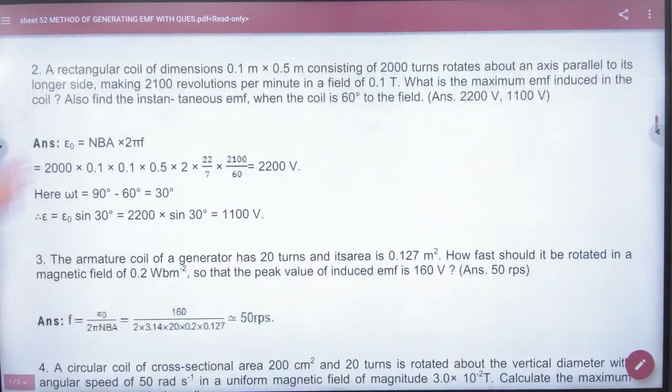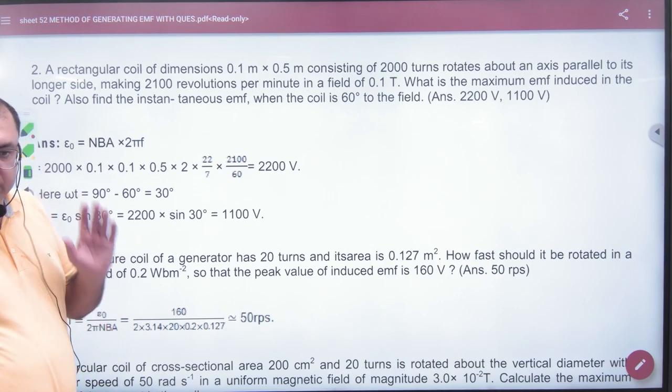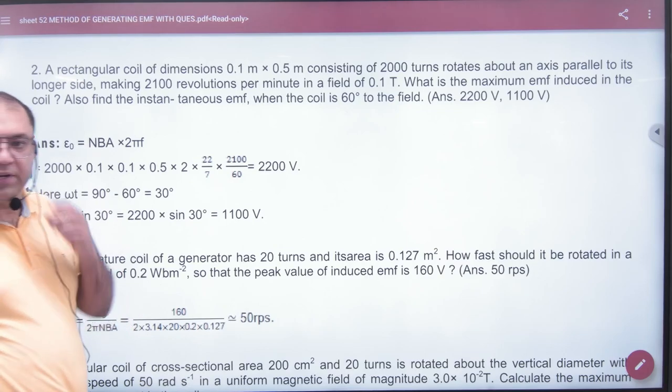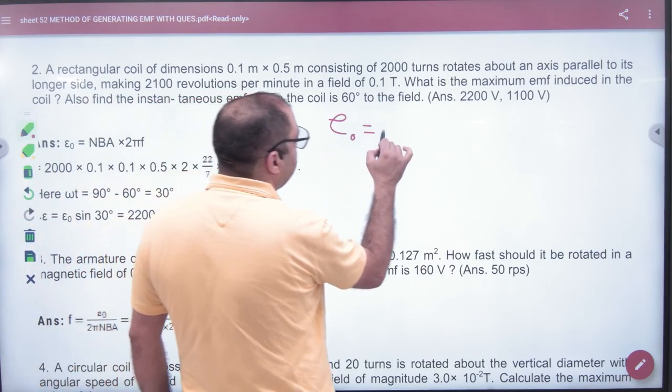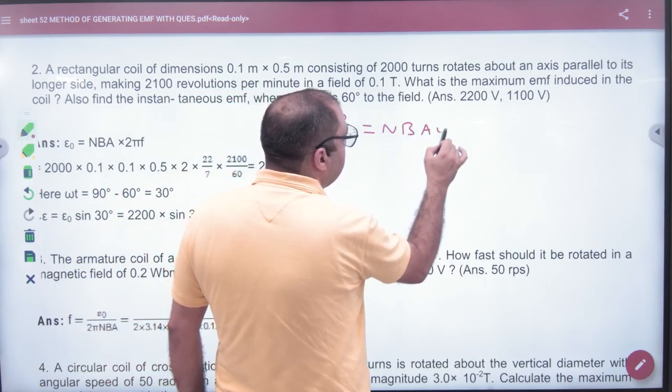Question number 2: A rectangular coil with dimensions 0.1 into 0.5, so we have given area. Consists of 2000 turns, axis parallel to longer side, making 2100 revolutions per minute. 60 divided by frequency, so omega is 2π frequency in a field of B = 0.1 Tesla. What is the maximum EMF induced? The answer is clear: the maximum EMF value is the formula NBA omega.